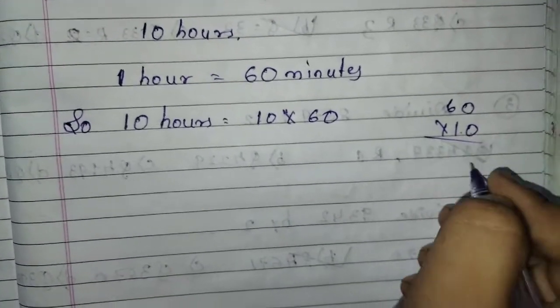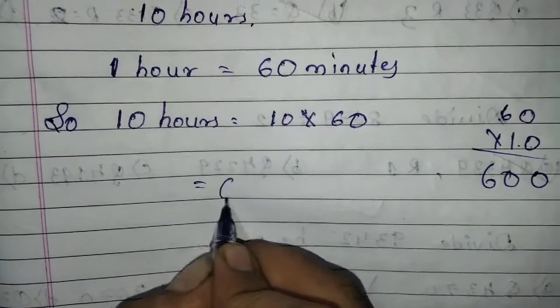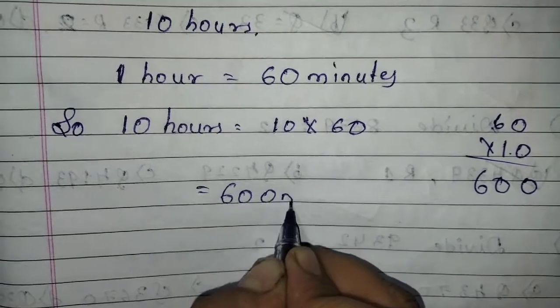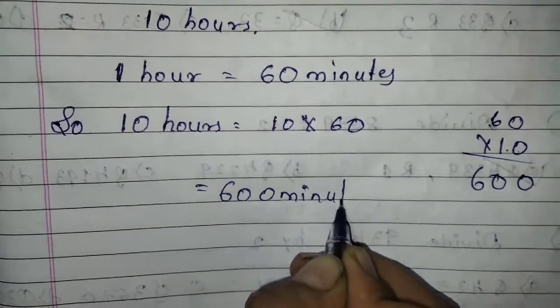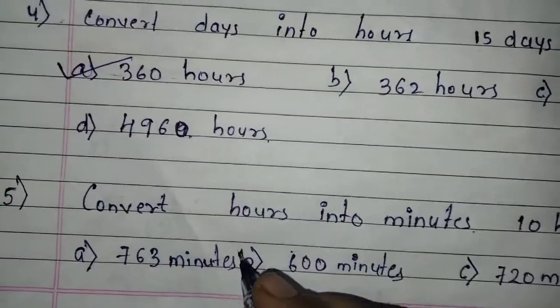10 times 0 is 0. 10 times 6 is 60. 600 minutes. So 10 hours is equal to 600 minutes. Children.